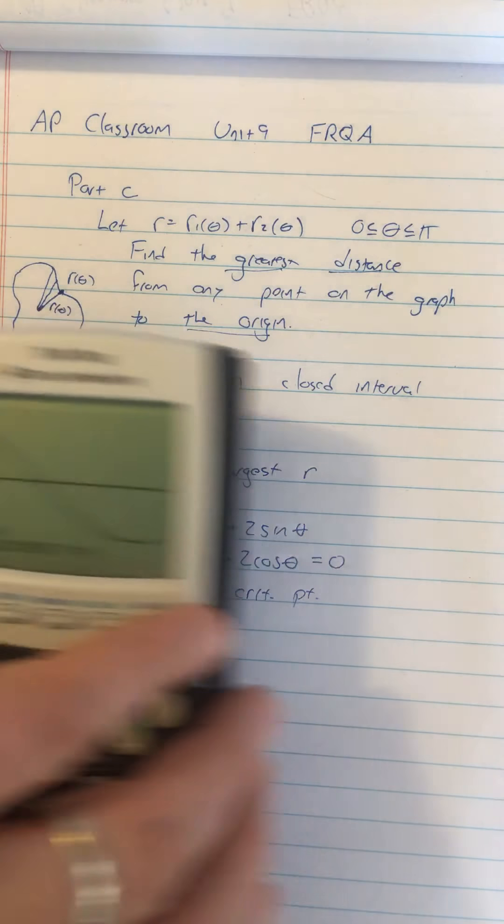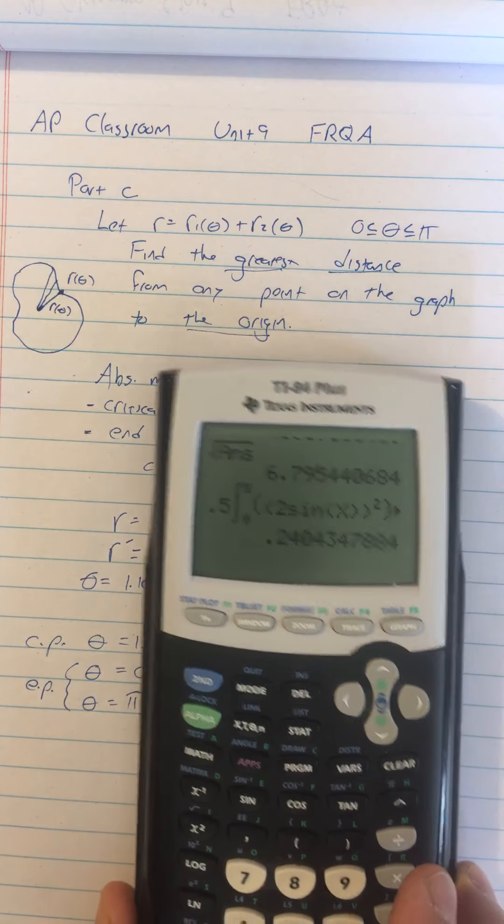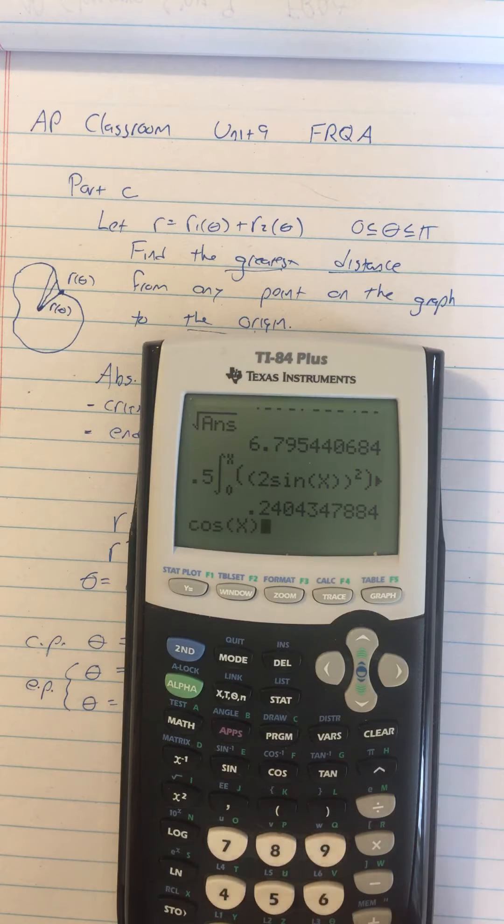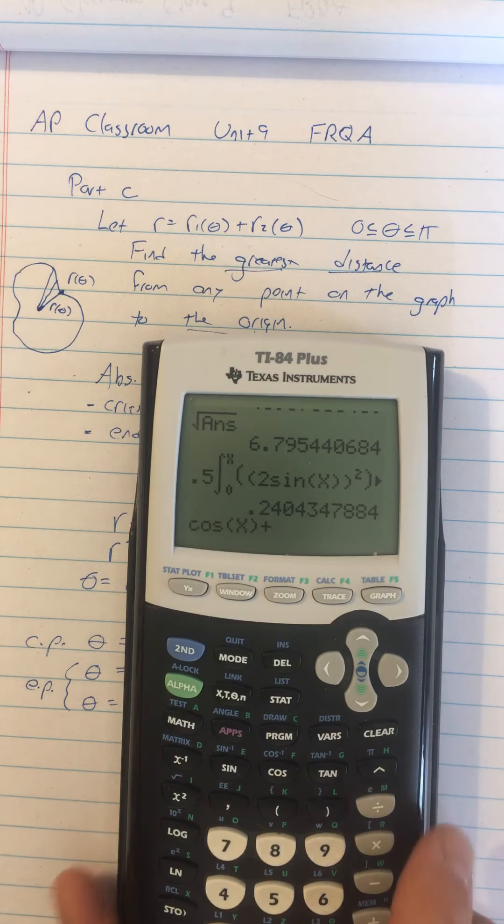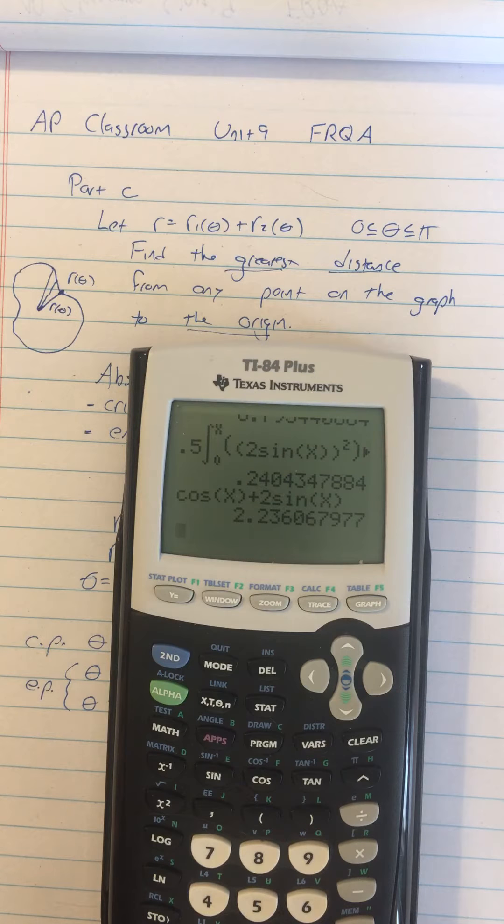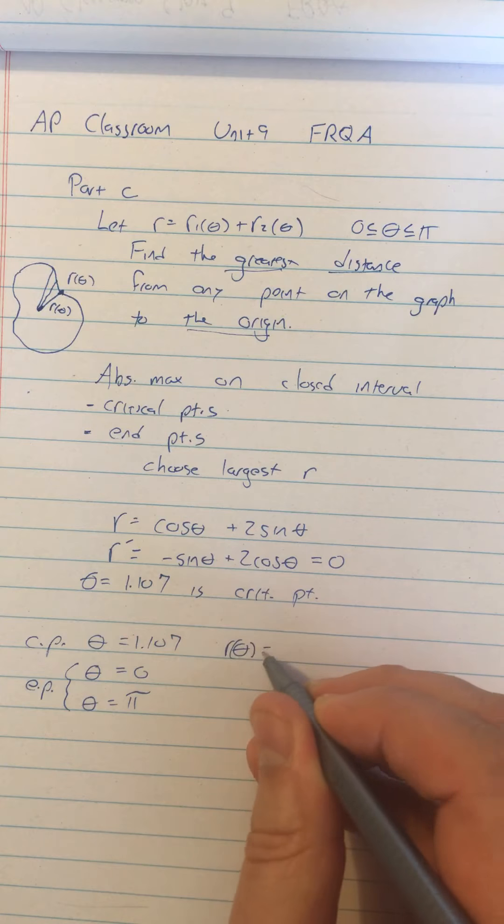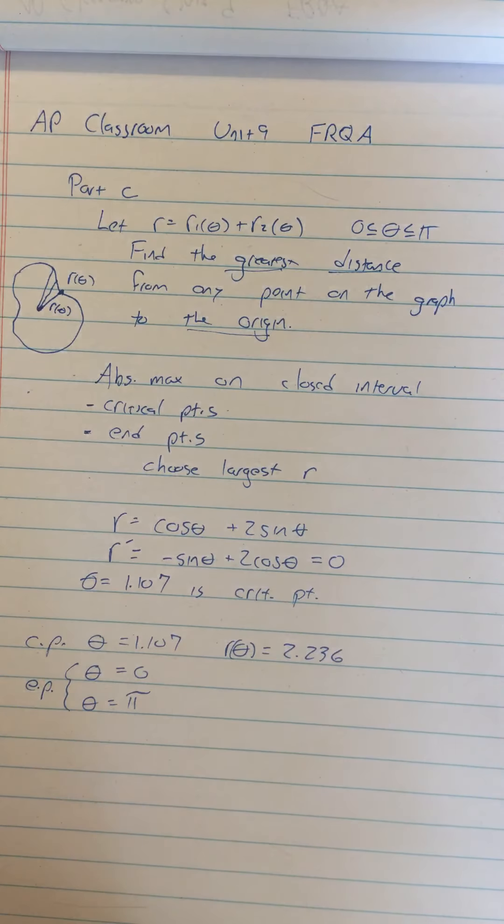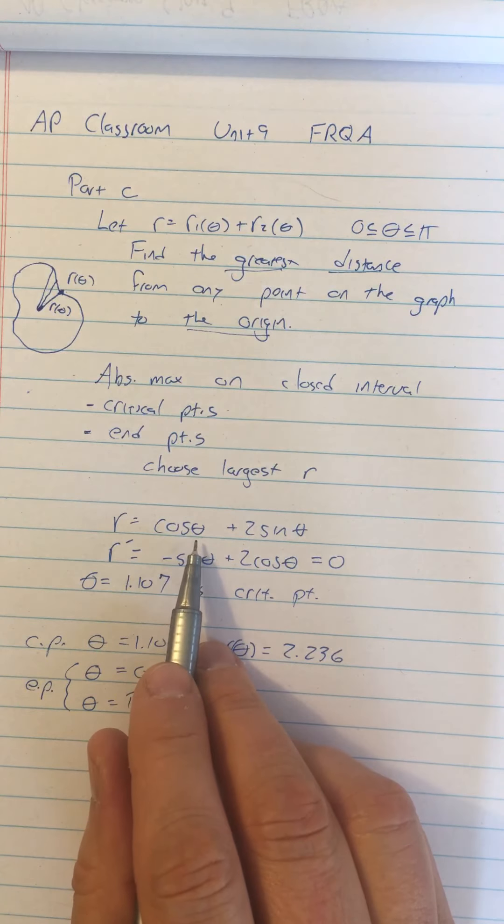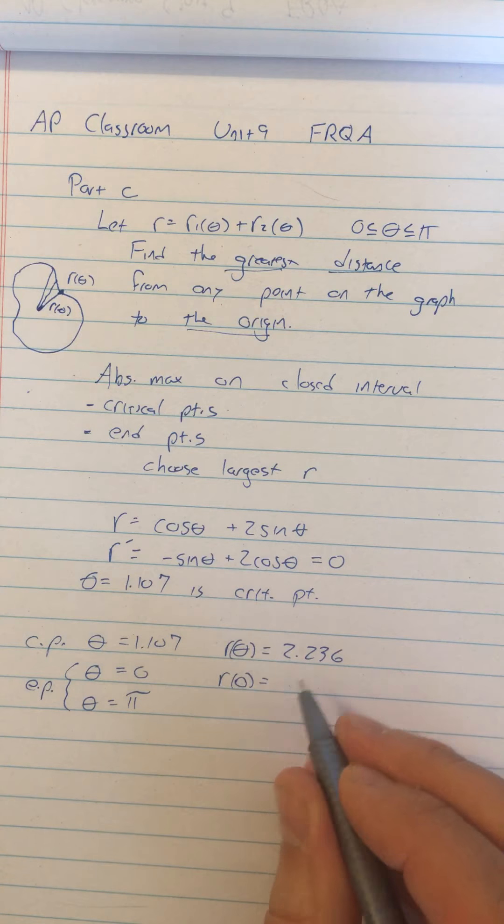Now we just need to find the value of cosine theta plus 2 sine theta for each of these values. So let's do, quitting out of here. We're going to do cosine of 1.107. Now, since I still have that as my x variable again, I can do cosine of x plus, is it cosine plus 2 sine? Yeah. Plus 2 sine of x and see what that is. And it is 2.236. So R of theta equals 2.236. And then for my endpoints, I have zero. Well, let's see. For if I plug in zero, I mean, I could put this in my calculator, but I know the cosine of zero is one. Sine of zero is zero. So R of zero is just going to be equal to one.